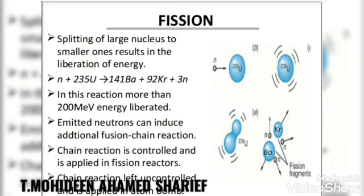Nuclear fission is the splitting of a large nucleus into smaller ones, resulting in the liberation of energy. In this reaction, uranium with mass number 235 is bombarded with a neutron and is fissioned into many smaller particles. The average energy released in each fission process is about 3.2 × 10⁻¹¹ joules. Nuclear fission is pictorically represented in this reaction; more than 200 MeV of energy is released.